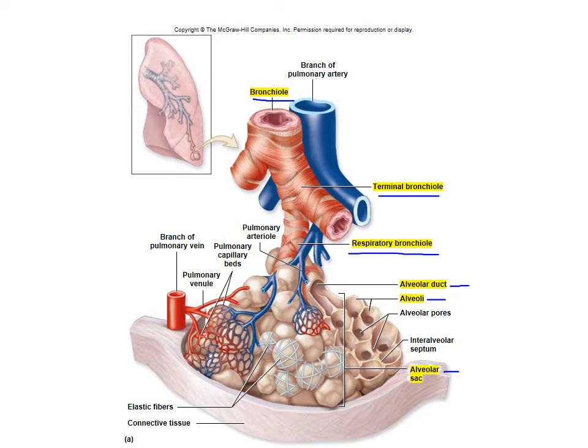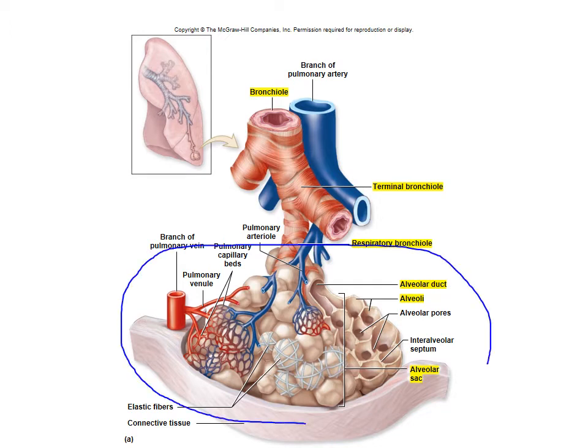This whole structure that I'm circling is what we refer to as a pulmonary lobule — a whole organized unit or cluster of alveoli that comes directly off of the respiratory bronchiole. We have several of these in your lungs; it's not just one set, so keep that in mind.